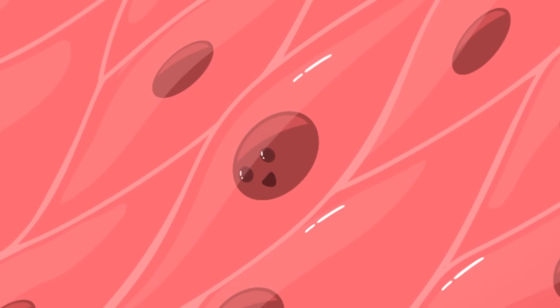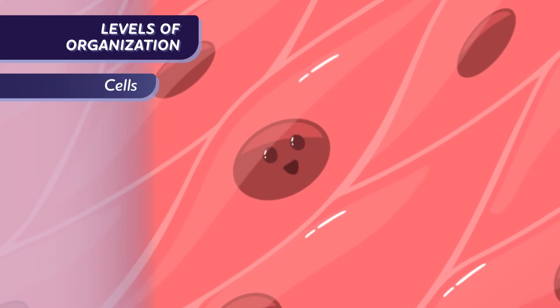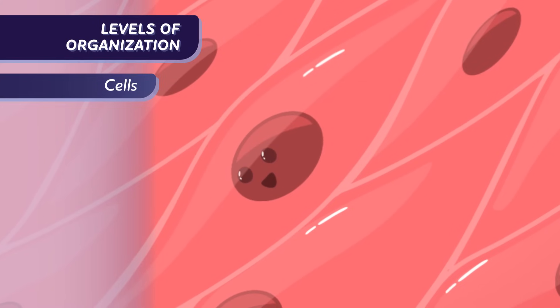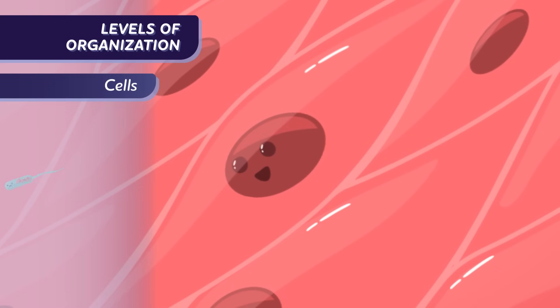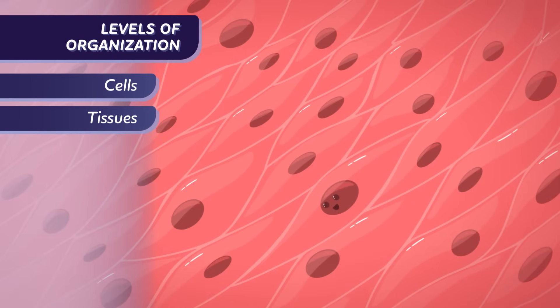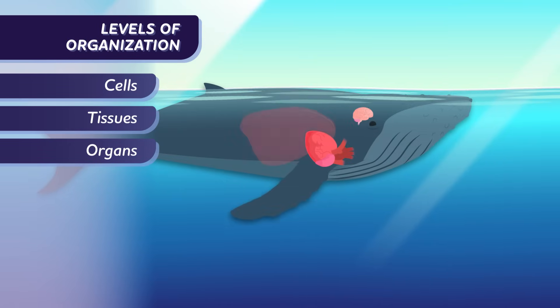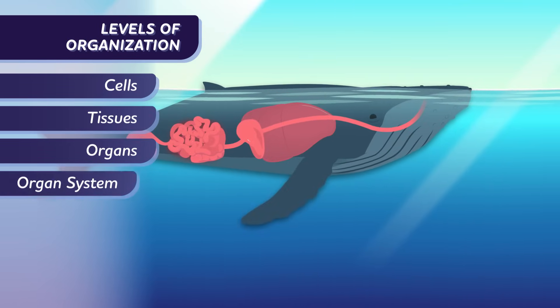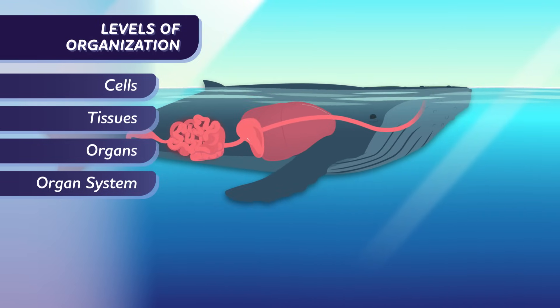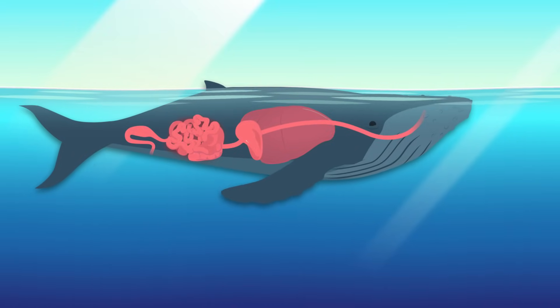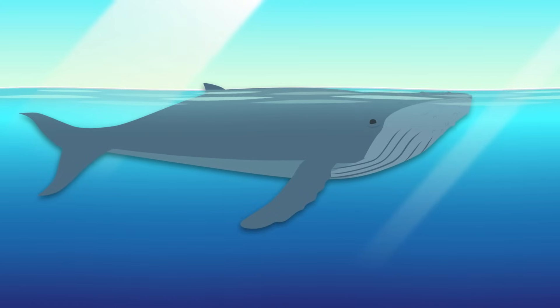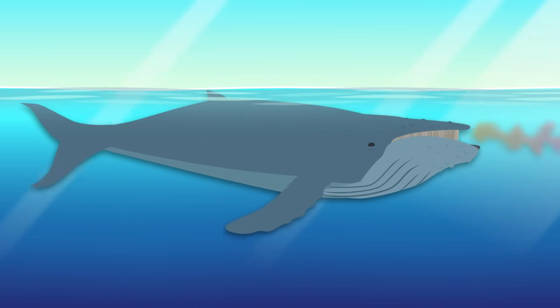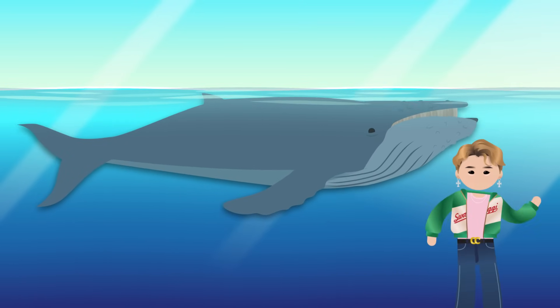Like how a boy band's harmonies only work if all the members are there. Life itself is an emergent property. It starts with cells, the basic building blocks of all living things. But all living things have cells, or are cells, in the case of single-celled organisms like bacteria. Groups of similar cells make up tissues. Tissues make up organs, such as the whale's heart or brain. As groups of organs work together, they form a connected system — in this case an organ system. Like the whale's nervous system, which sends messages to the rest of her body to swim that way, towards that tasty swarm of krill, or to belt out a tune.